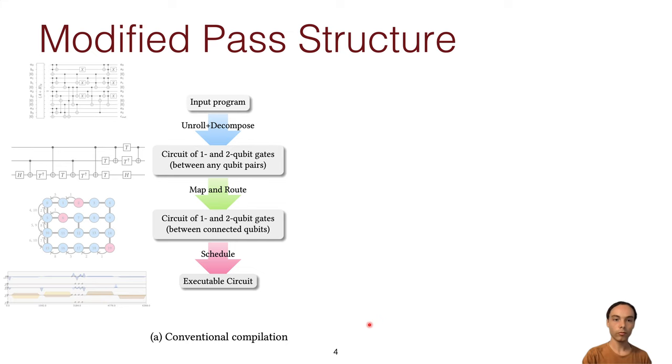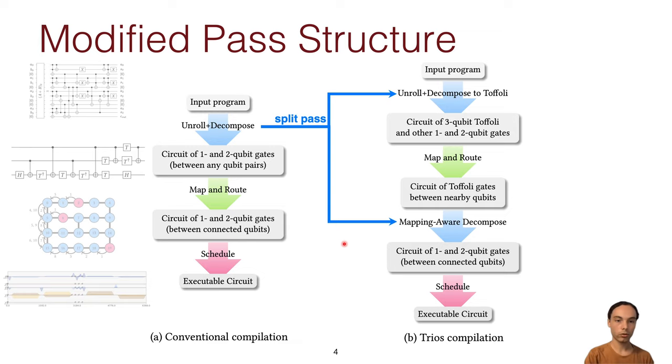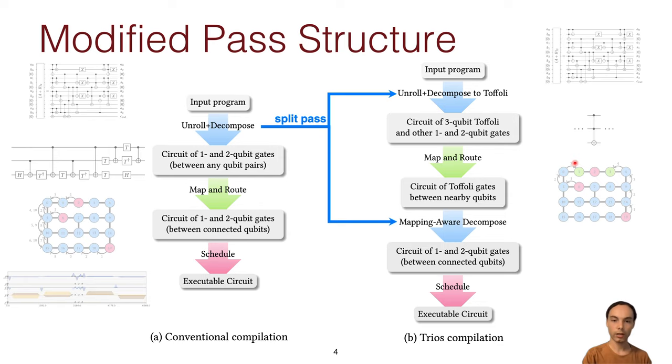So now we propose modifying this structure by splitting this decompose pass at the beginning into two passes, the first one where we unroll most of the way, but stop at this intermediate instruction level of Toffoli's. Then we do the normal routing, but the routing can be smarter since it has a little bit more knowledge of the structure of the program.